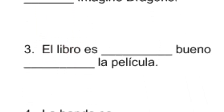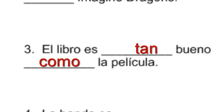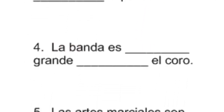Number three: El libro es _____ bueno _____ la película. In this case we don't have a noun in between — we're saying 'as good as,' so we use tan. El libro es tan bueno como la película — as adjective as.